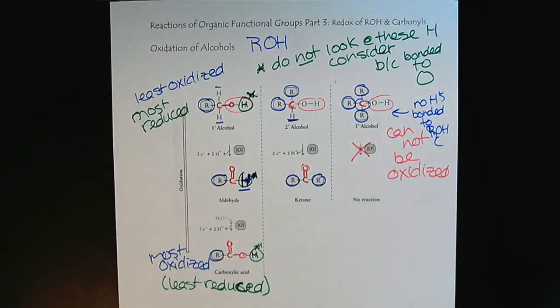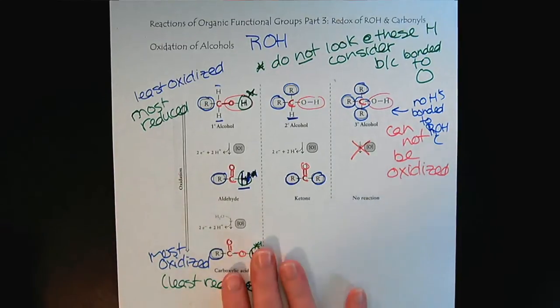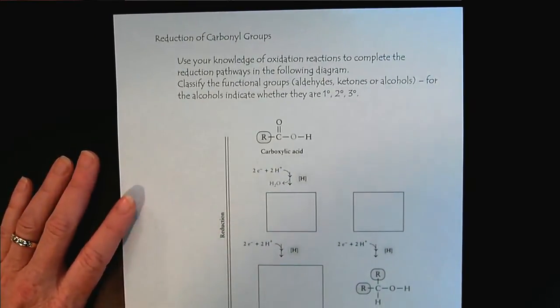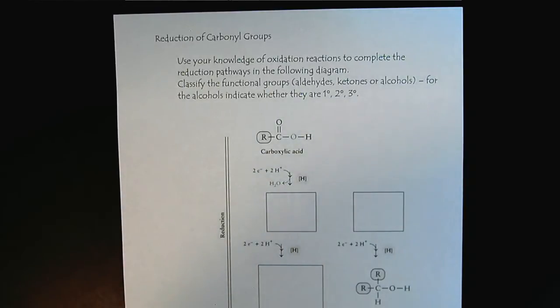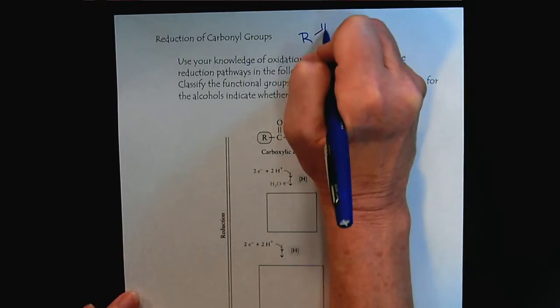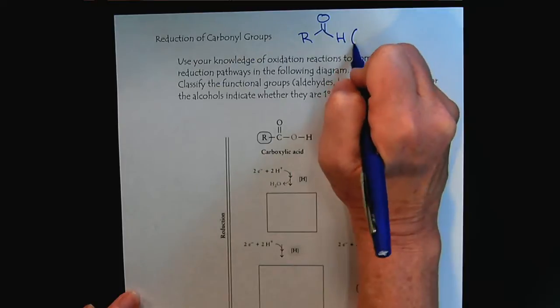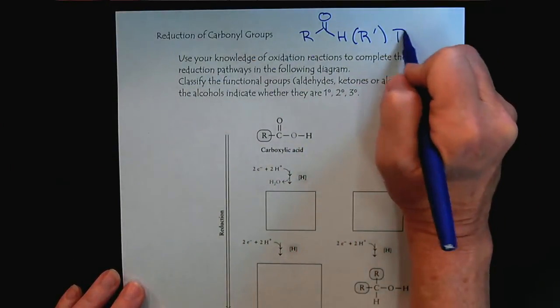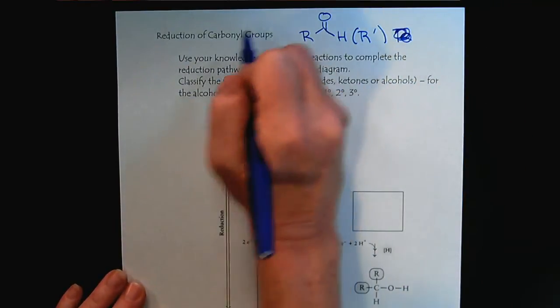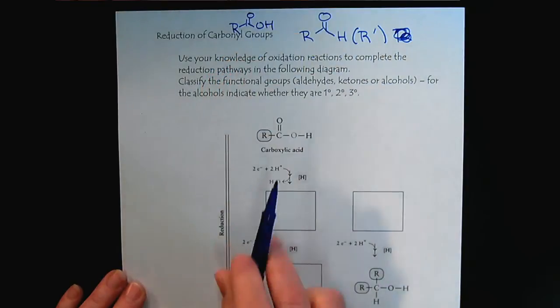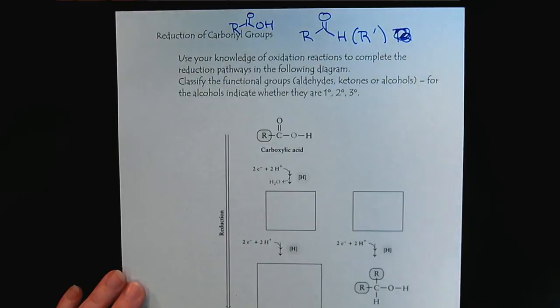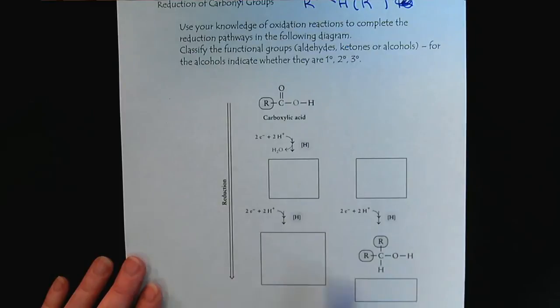Now we'll do a quick review of reduction, which will just be flipping this oxidation around. When we talk about oxidation, we focus on the alcohol. Alcohol is becoming oxidized since they're the most reduced. With carbonyls, we recognize our carbonyl group here, and we're going to focus on aldehydes or ketones. We'll also look at carboxylic acids because of primary alcohols. Basically, if you understand oxidation reactions, then you really understand reduction reactions already. So let's test your understanding.